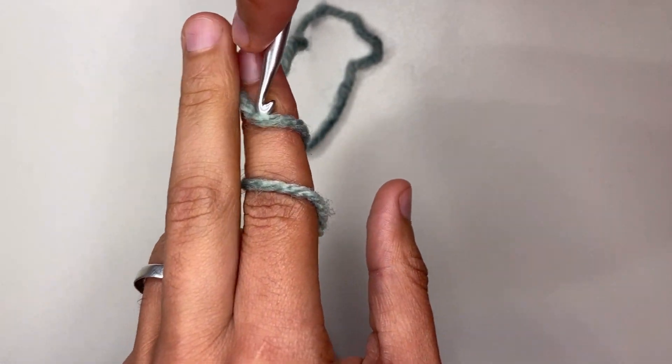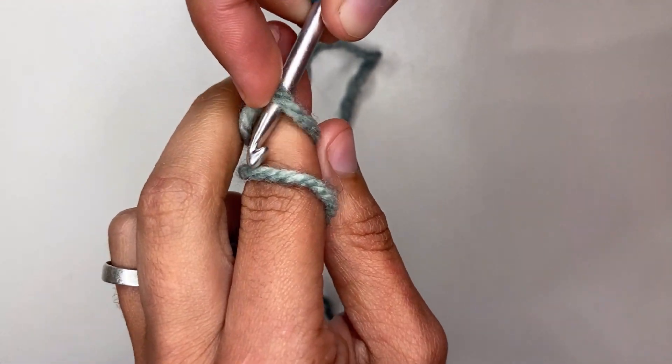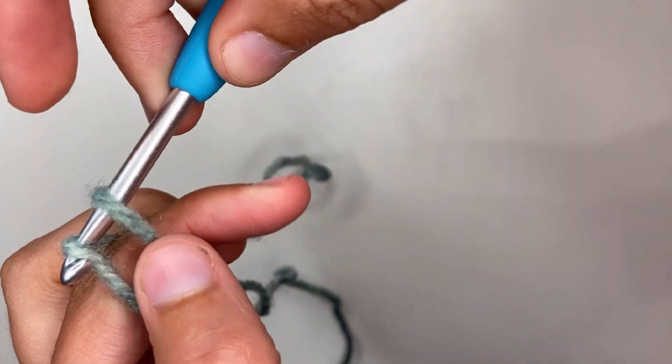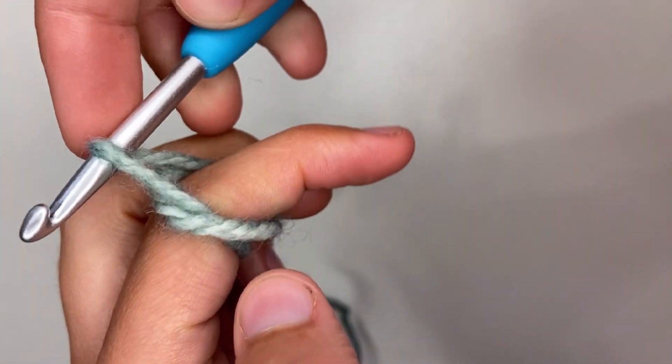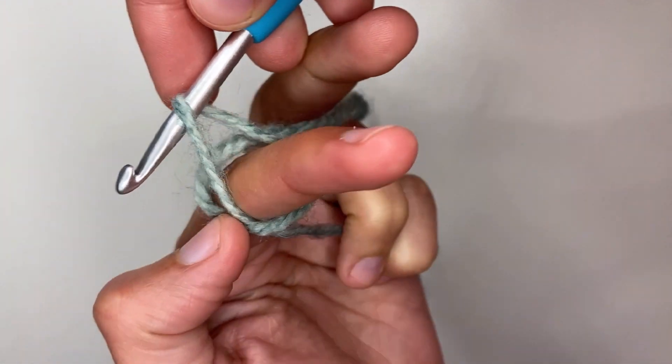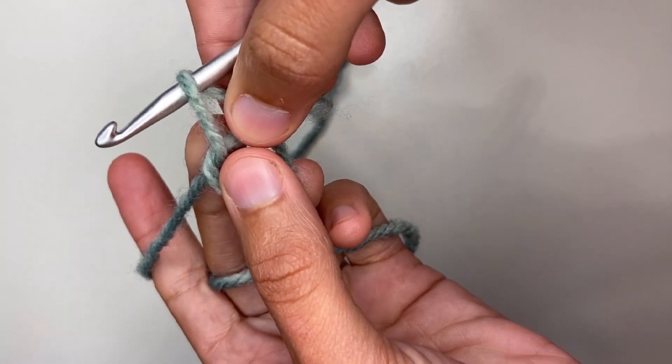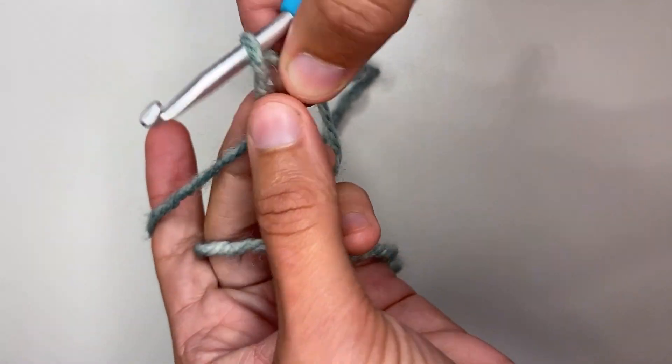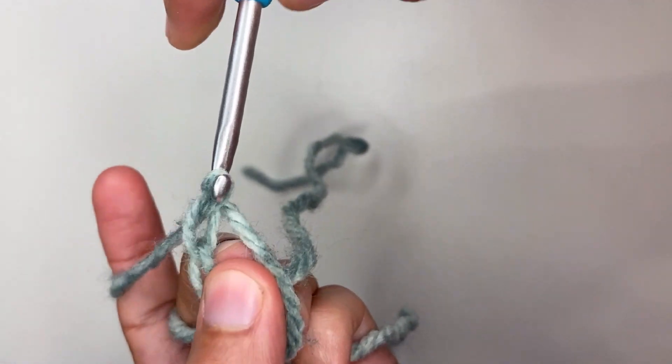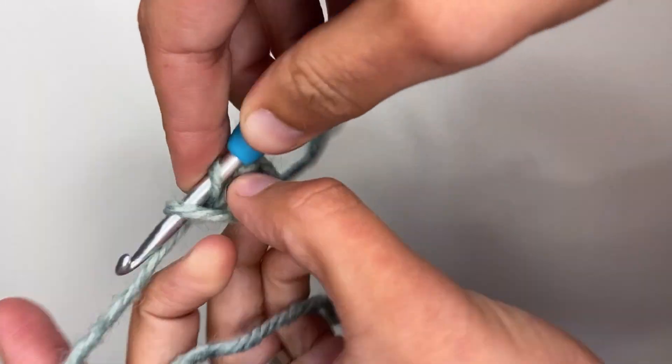Insert your crochet hook under both of the strands of yarn and pull up the second strand. When you come out, twist the yarn so you make a loop around your finger. I like to hold my loop open by pinching at the corner and keeping one finger inside the loop while I chain one.